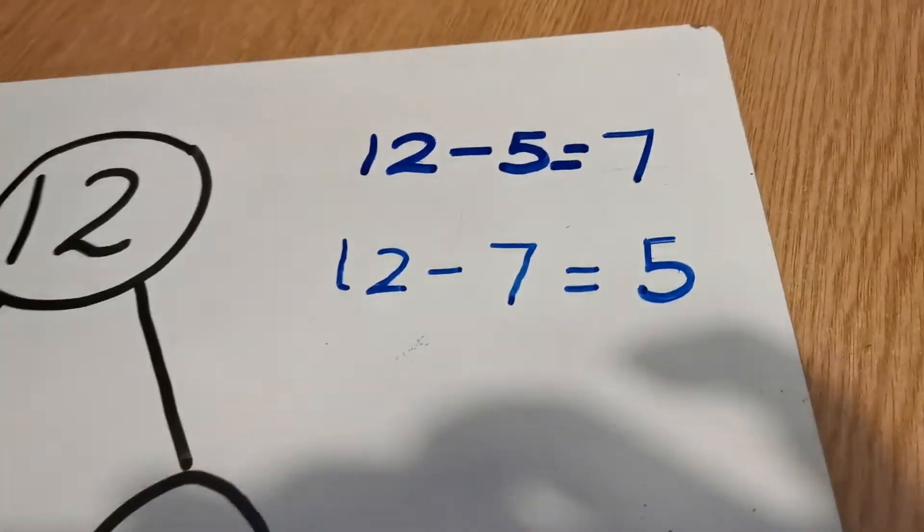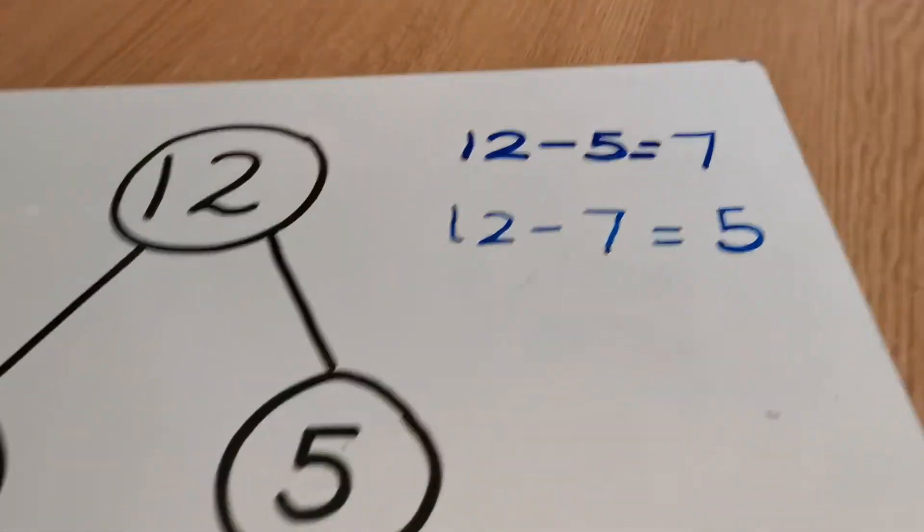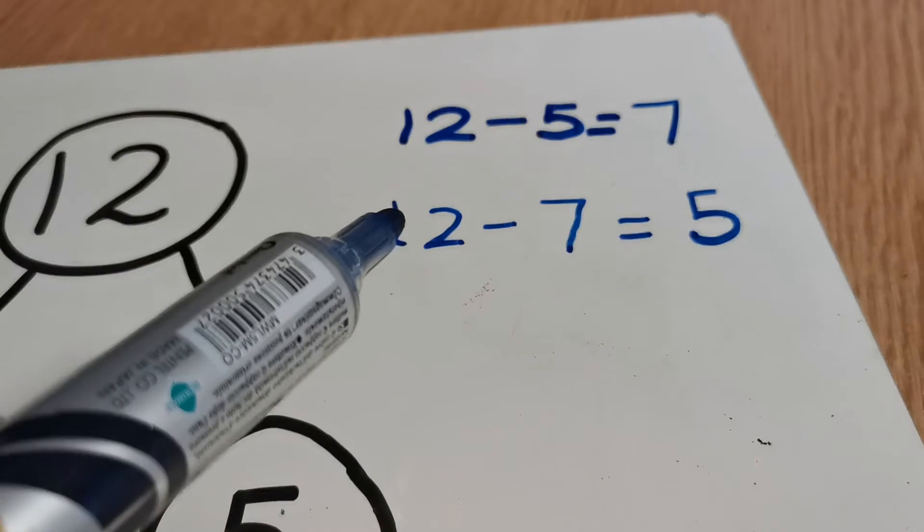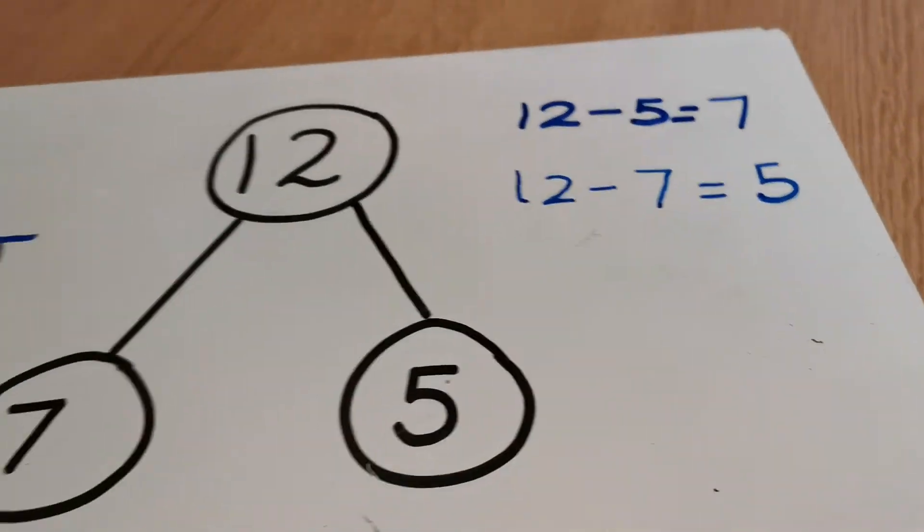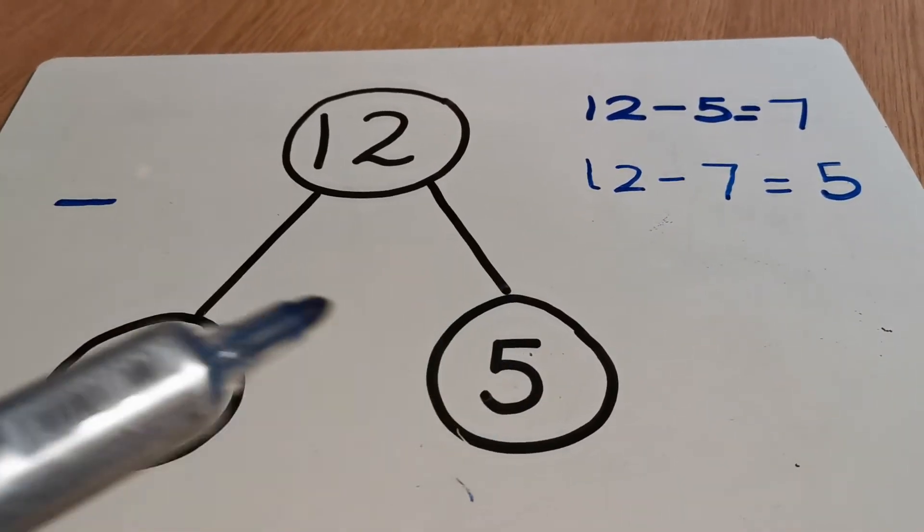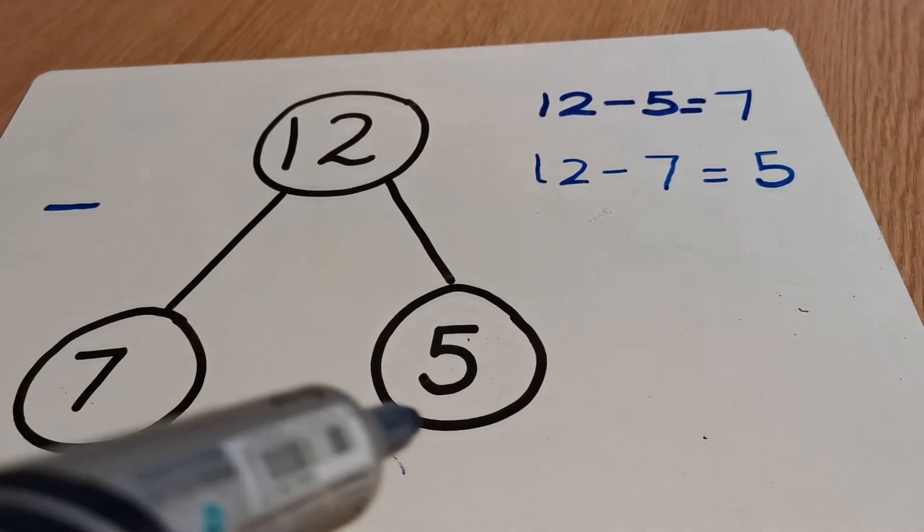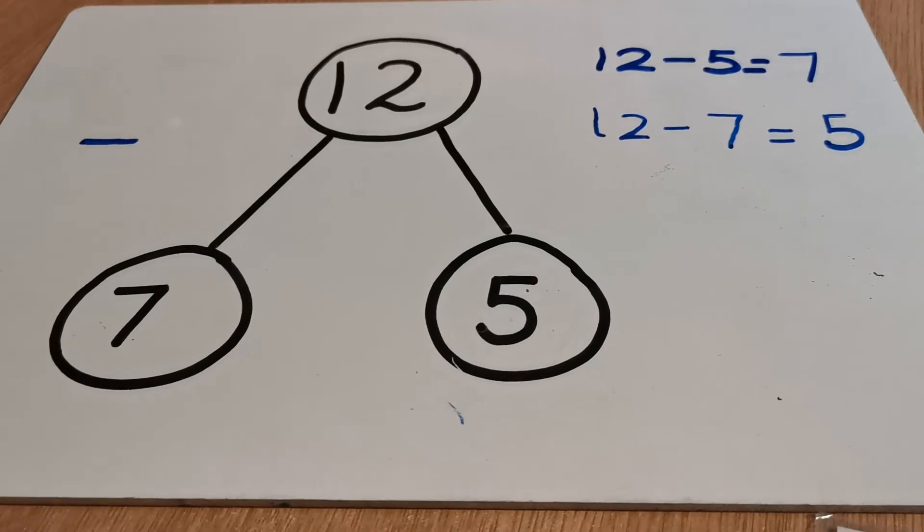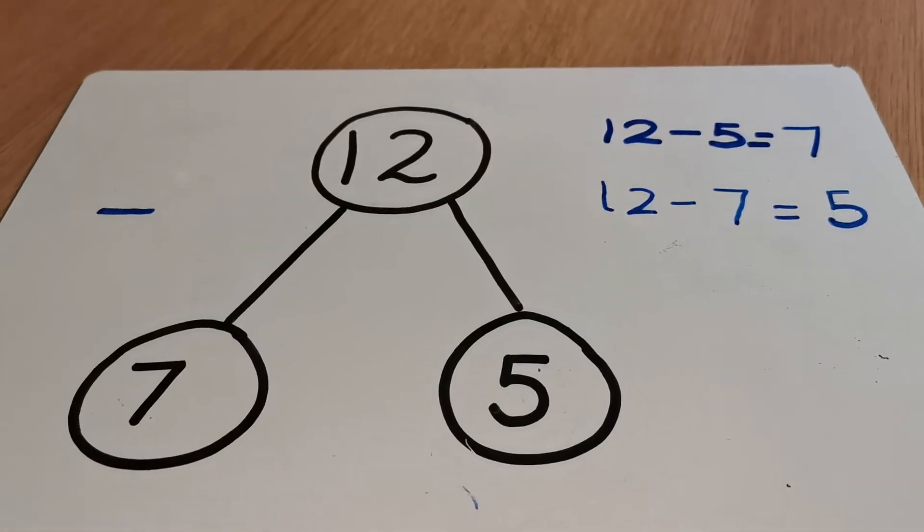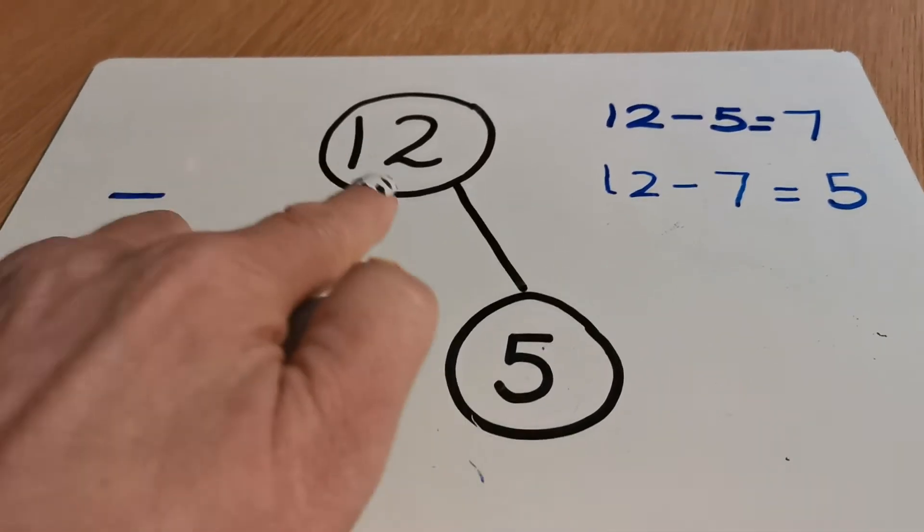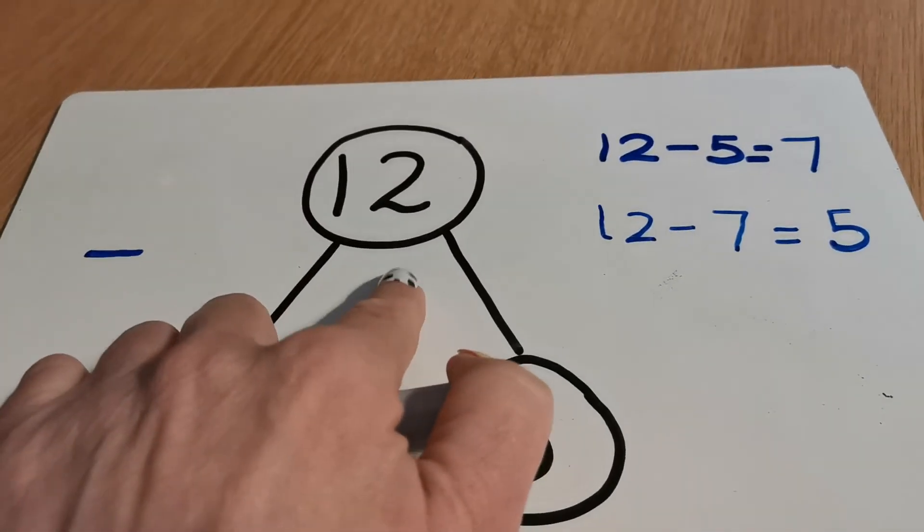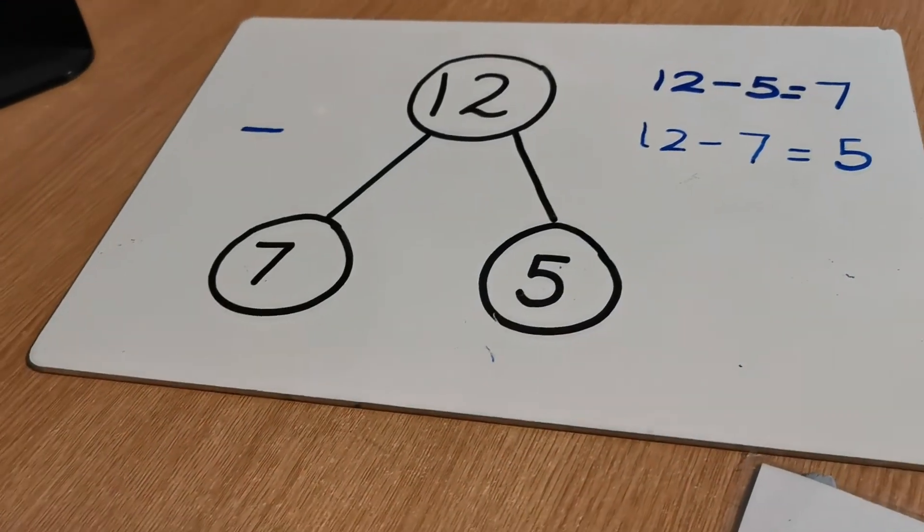So although the switcher looks different, there is still a switcher. It's just different to the addition one. So 12 take away 5 equals 7, and 12 take away 7 equals 5. Now the problem I anticipate you having today is that you won't always start with the biggest number. You might need to be reminded about that—every time you need to start with the biggest number.